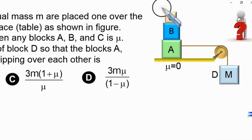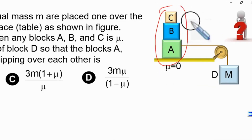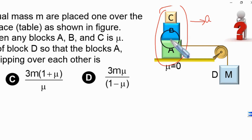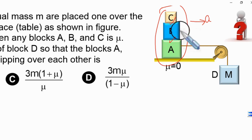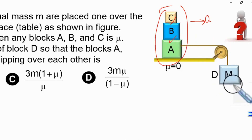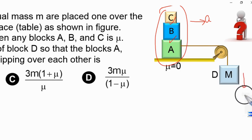If the system is moving together, that means it should have a common acceleration — let us assume this acceleration is small 'a' in the rightward direction. The nature of friction between surfaces of A-B and B-C should be static. Block A and D are connected by a light string, so block D moves downward with the same acceleration 'a'.